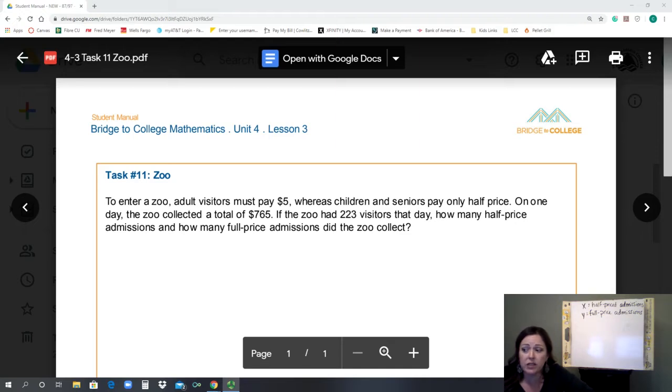Well, the story problem said that there were a total of 223 visitors. So the number of half-price admissions and the number of full-price admissions has to total 223. So I create my first system that way: X plus Y equals 223. So this equation is dealing with quantity of people.